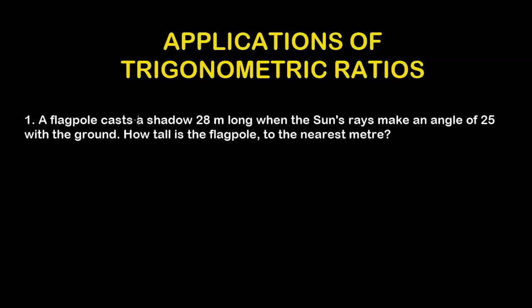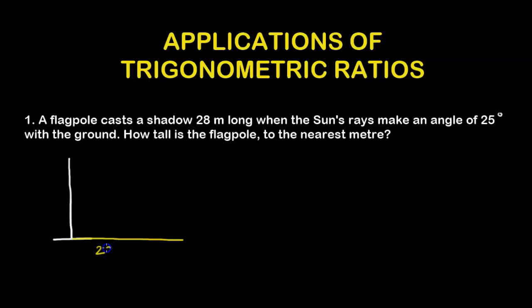Let's read the first example: a flagpole casts a shadow 28 meters long when the sun's rays make an angle of 25 degrees with the ground. How tall is the flagpole to the nearest meter? Since it is a flagpole, it will be standing straight on the ground. It casts a shadow 28 meters long. A shadow is always seen on the ground, so this is where the flagpole's shadow will appear.